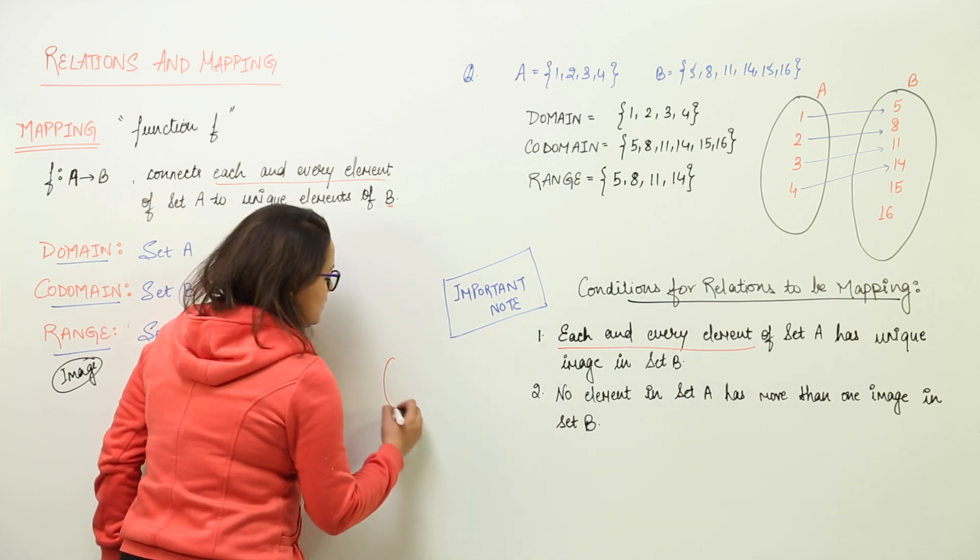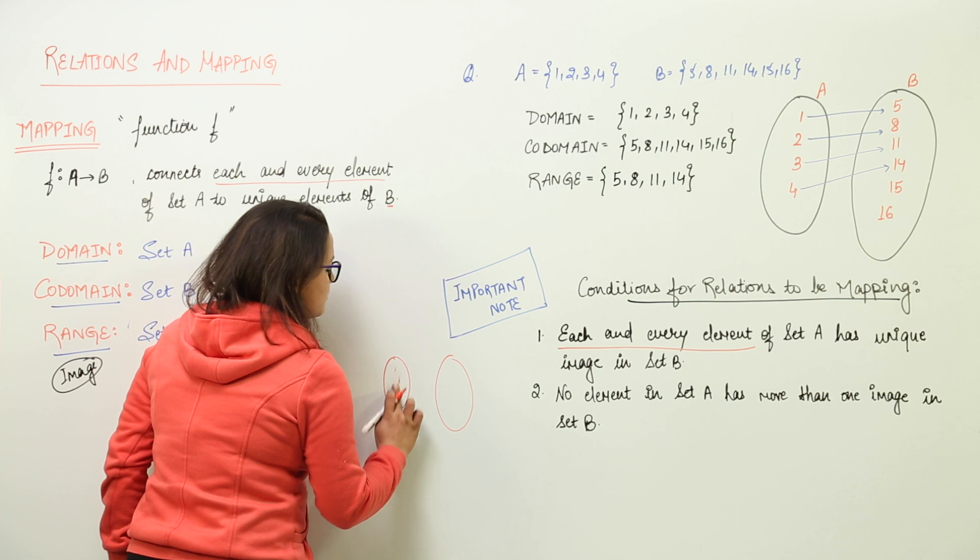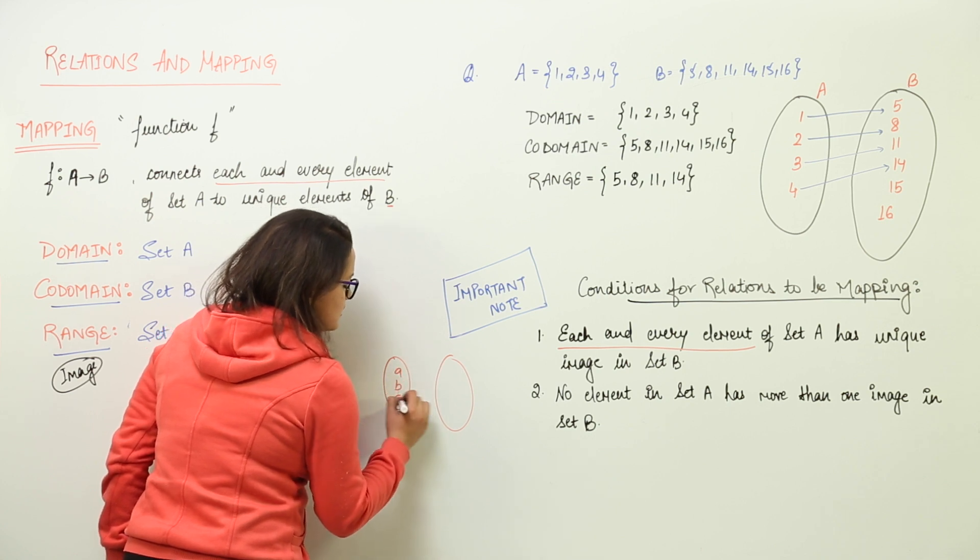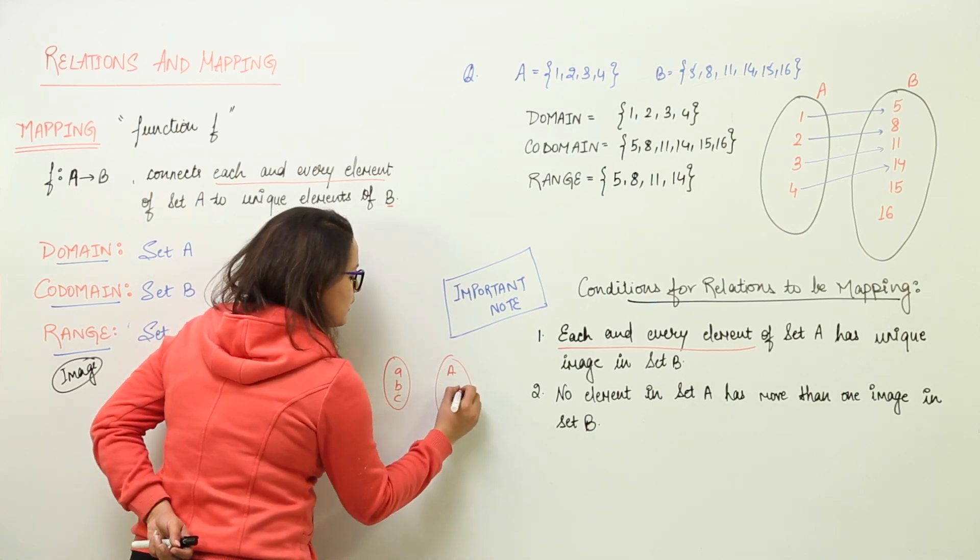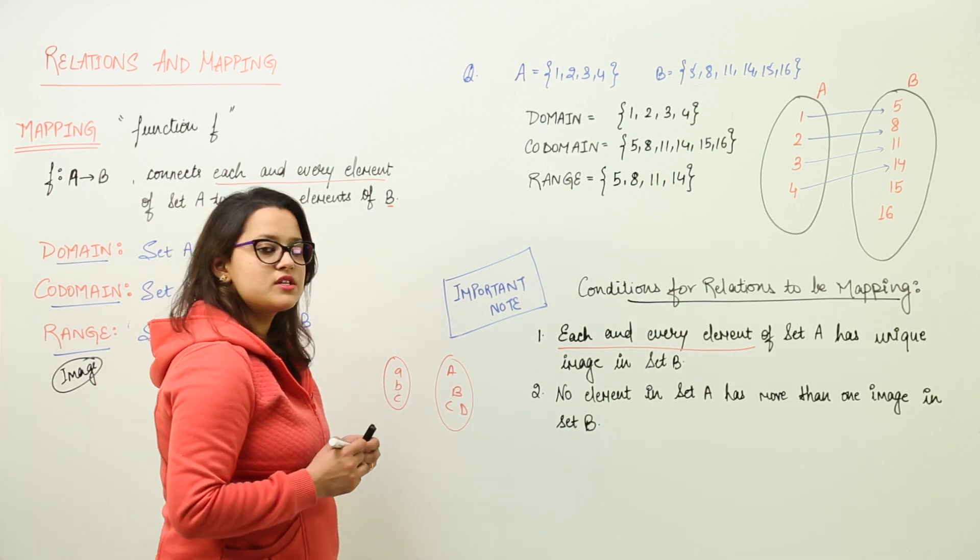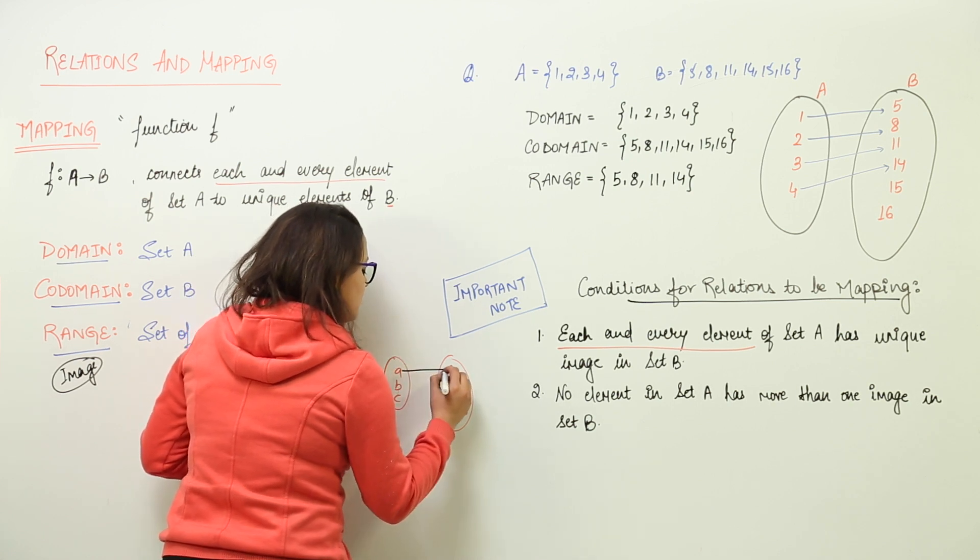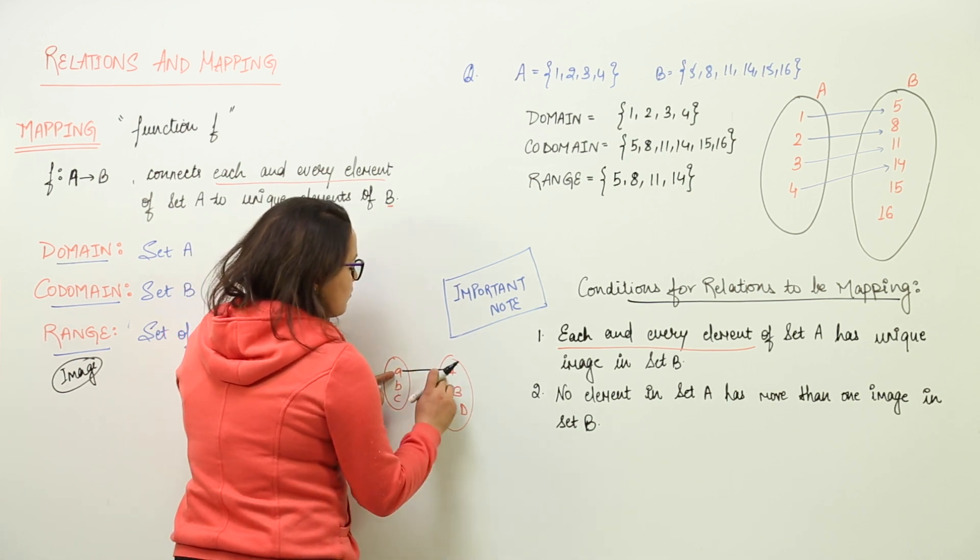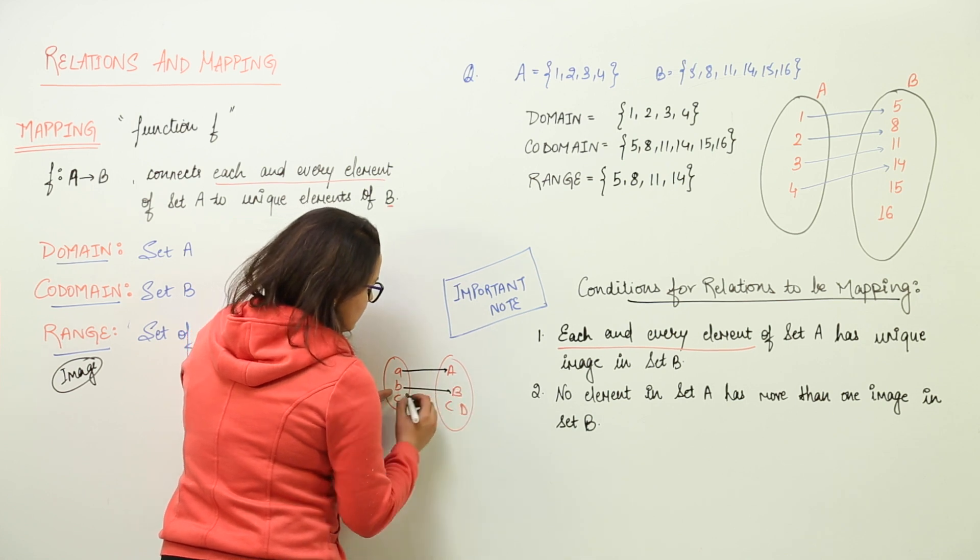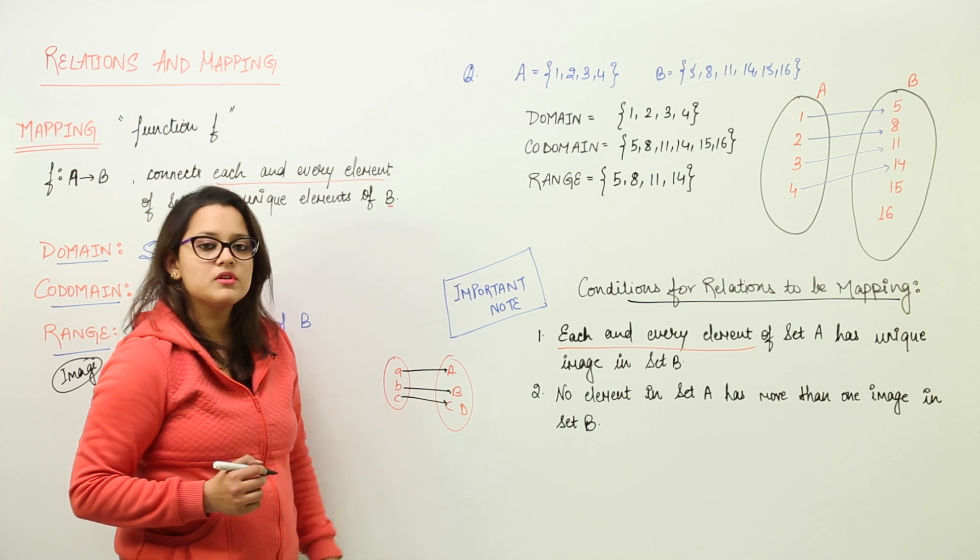This means that, for example, there is set A, 2, 3. Let's take them some random values. A, B, C. And here we have capital A, capital B, capital C, capital D. Now, with the first condition, we mean to say that each element of first one must have unique image. It can have one image, this can have another image, this can have another image. They cannot have same image.